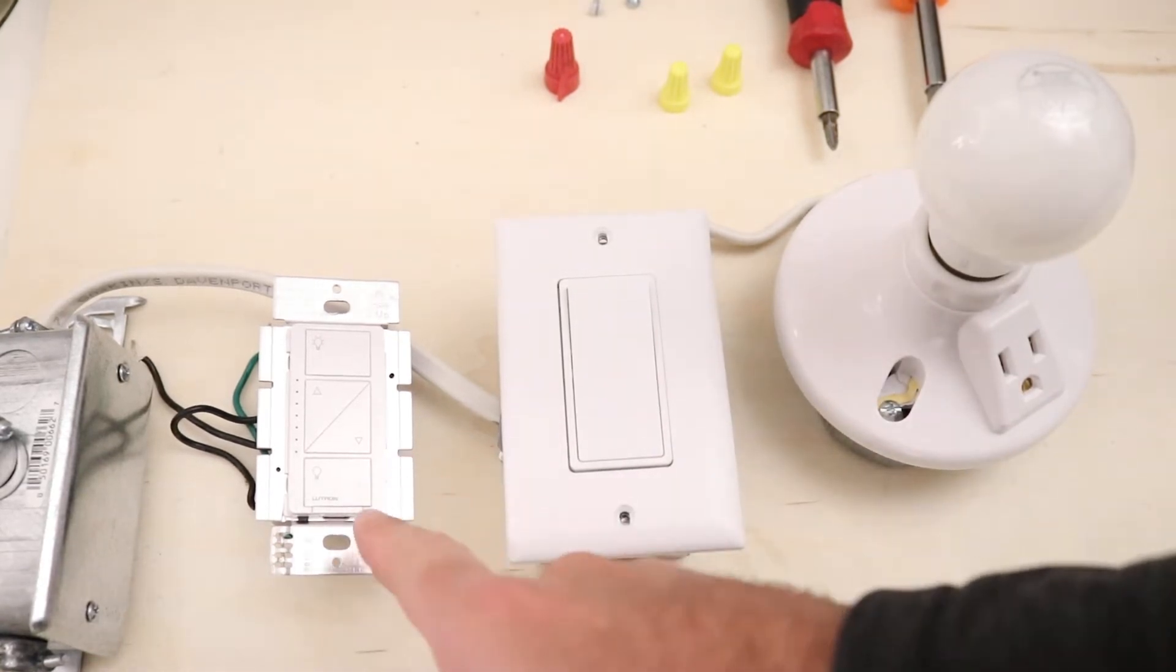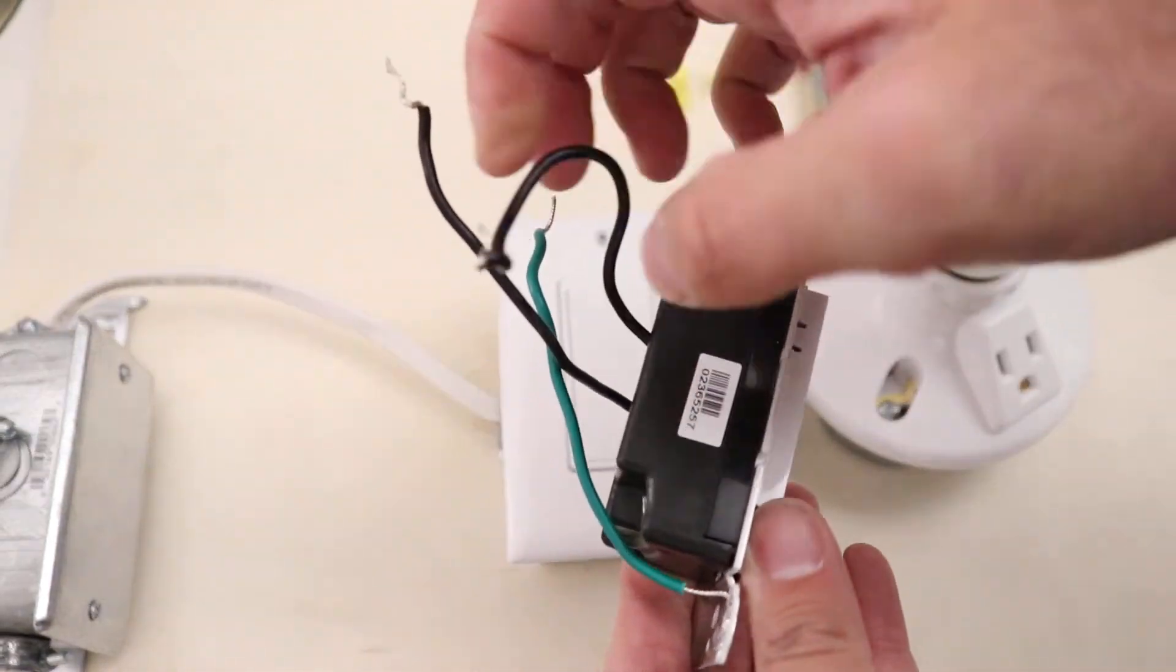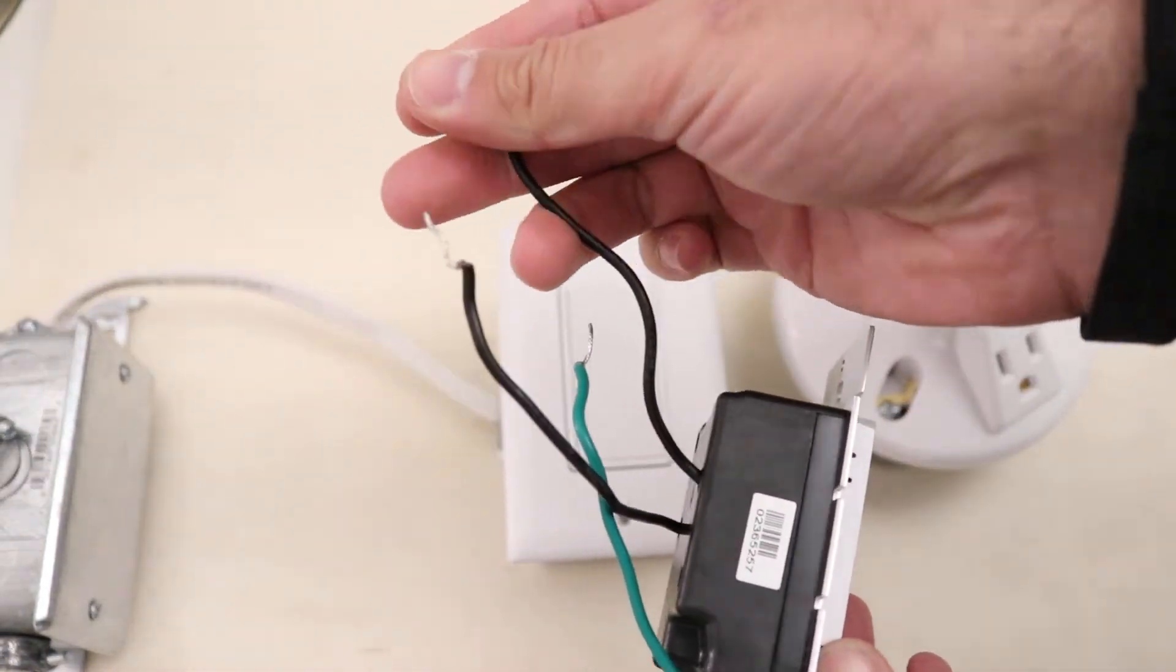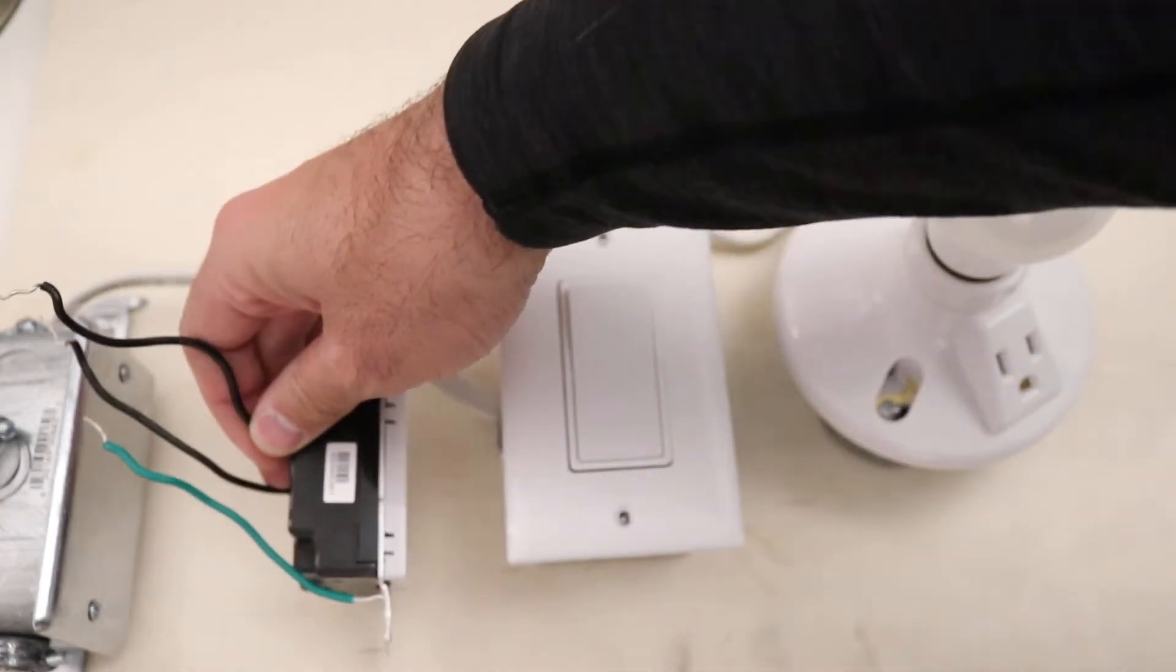So what we got here is a Lutron Caseta Smart Dimmer. It does not require neutral wire as you can see. You just got two wires on the back. You've got a hot wire and a load wire and then a ground wire. So it does not require neutral.